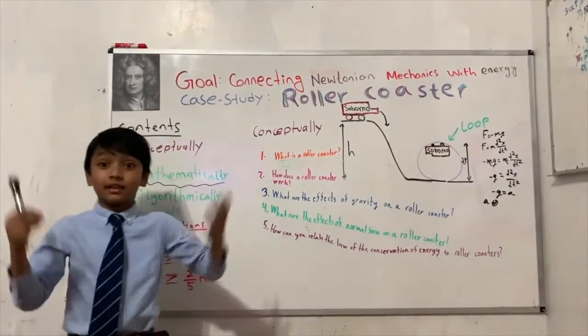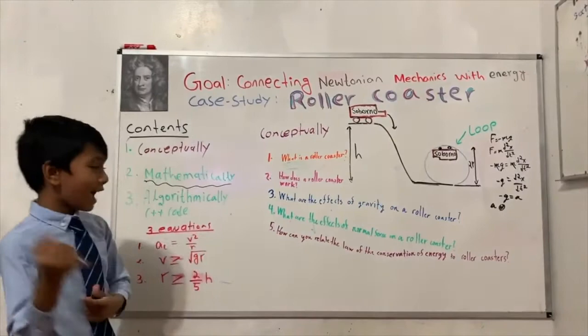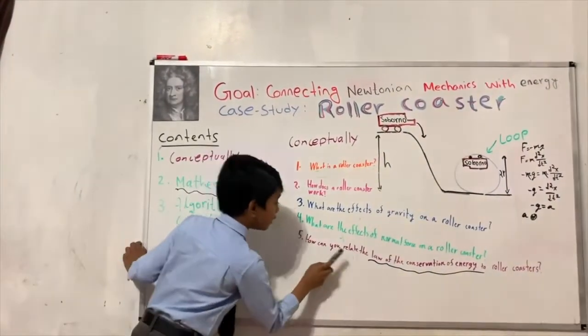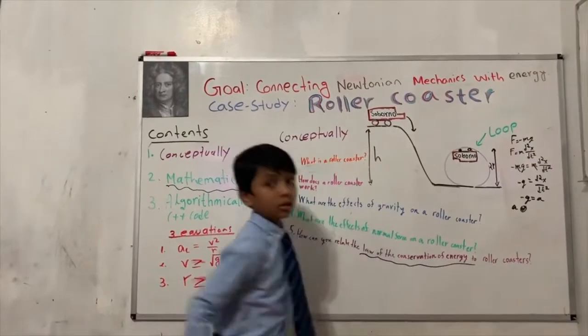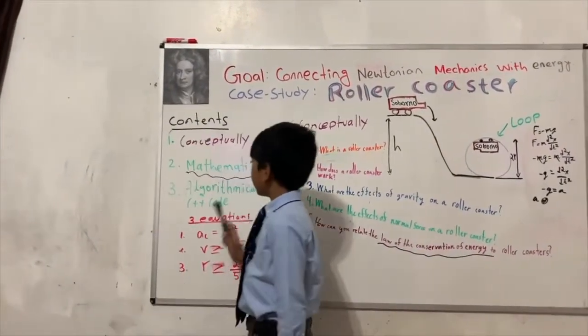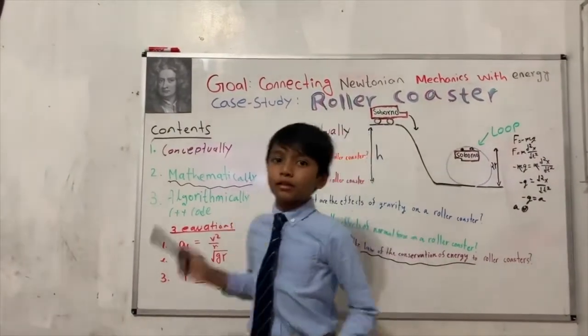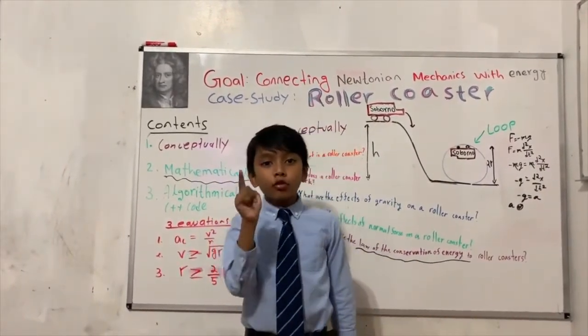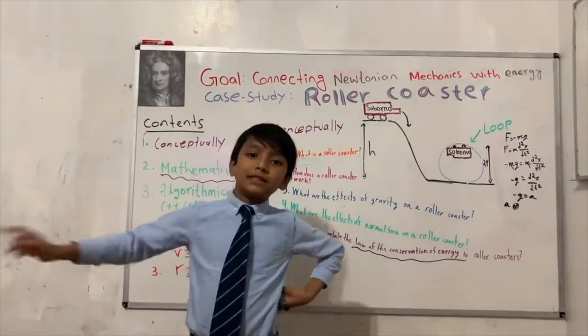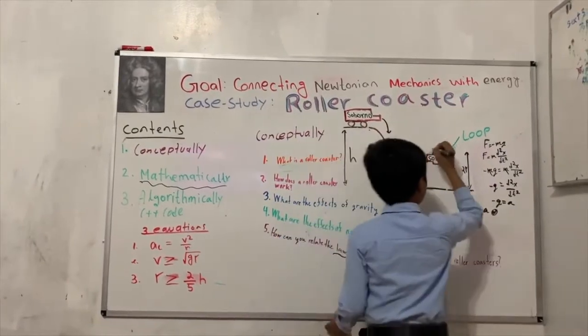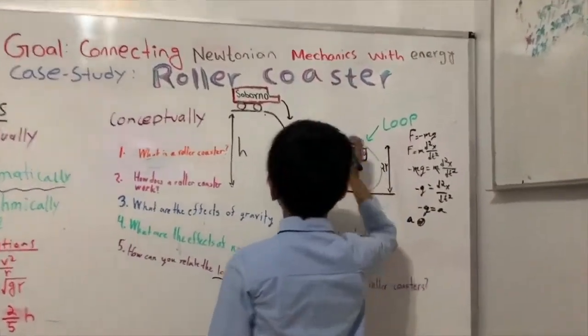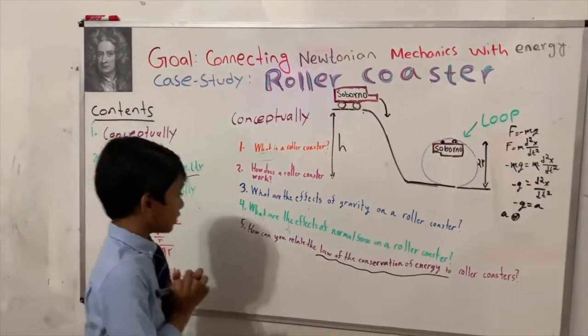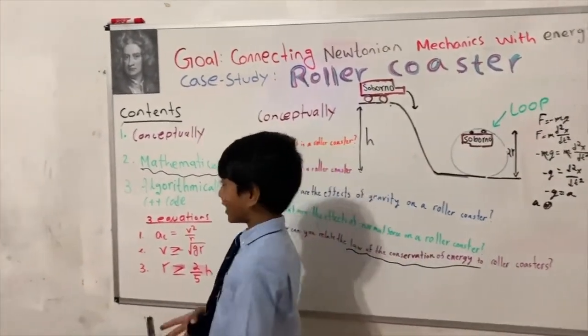And now, number five, the final question, the colossal question, the purple question. How can you relate the law of the conservation of energy to roller coasters? Okay, so this will be later shown in the mathematical part. But, the law of the conservation of energy proves that the radius is a function of the height of the slope. The radius of this loop is a function of the height of the slope. Now, let's move on to the second method, mathematics.